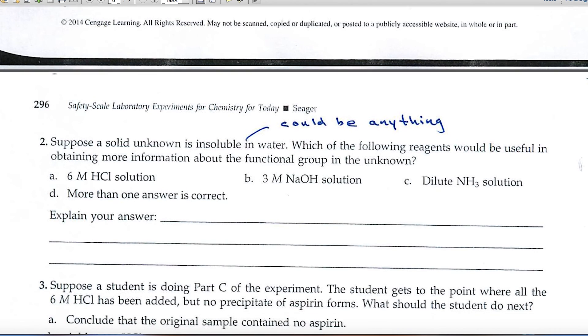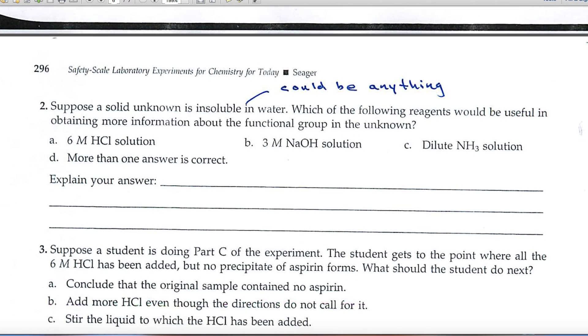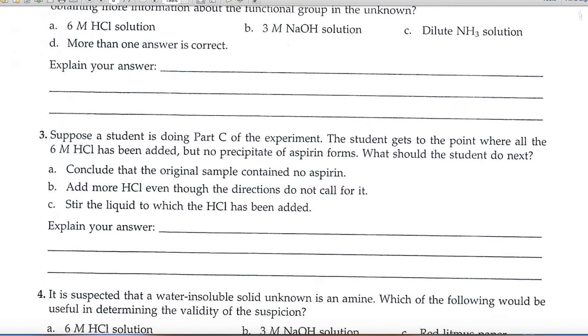And number two says, suppose a solid unknown is insoluble in water. Which of the following reagents might give you more information? Well, if an unknown is insoluble in water, it could be anything. Could be an insoluble carboxylic acid, an insoluble amine, or an insoluble amide. So we really don't know anything. We haven't ruled anything out at that point. I hope that helps you as you select your responses.